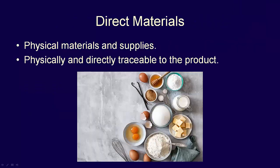Direct materials are the physical materials and supplies that are built into the product during the manufacturing process. For a bakery, this would include the flour, sugar, eggs, milk, butter, and other ingredients included in, for instance, a cake. These are the raw materials which can be physically and directly traced to the finished product.